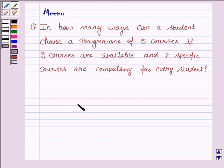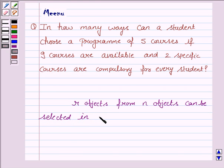we need to know the theory of combination, which says R objects from N objects can be selected in N C R ways.